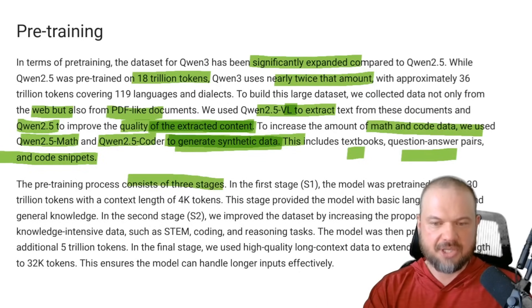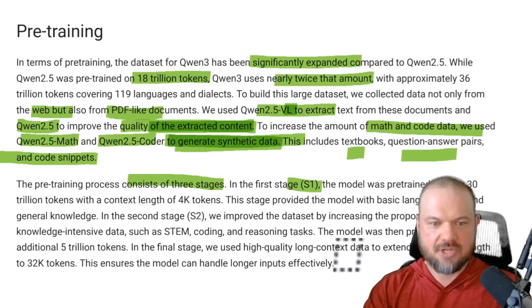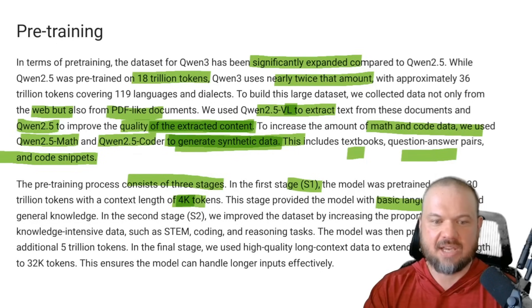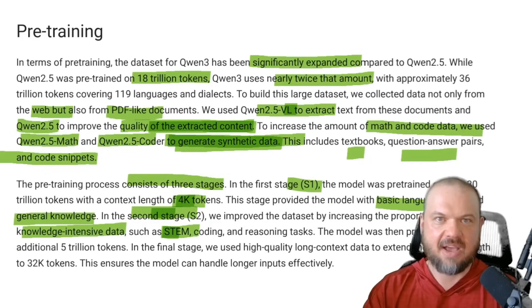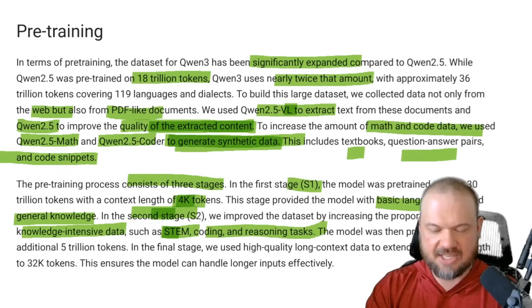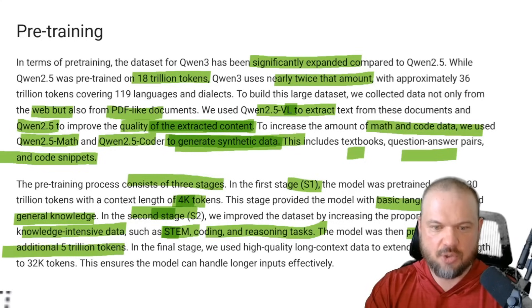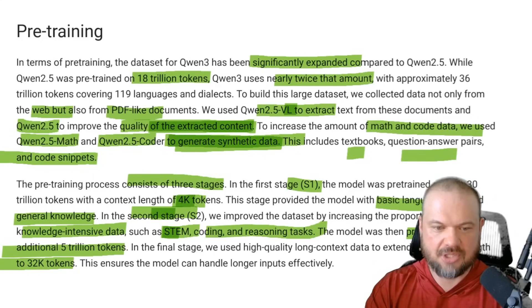There are three stages to the pre-training. Stage one: pre-trained on over 30 trillion tokens with a context length of 4,000 tokens, giving it basic language skills and general knowledge. In stage two, they improved it by increasing the proportion of knowledge-intensive data — STEM, math, engineering, coding, reasoning tasks — and pre-trained on an additional 5 trillion tokens. In the final stage, they used high-quality long-context data to extend the context length to 32,000 tokens.